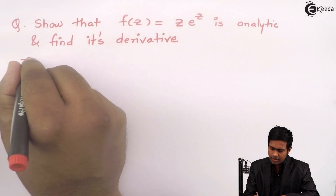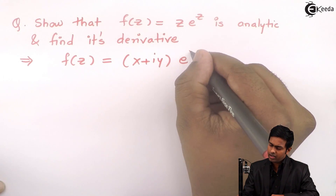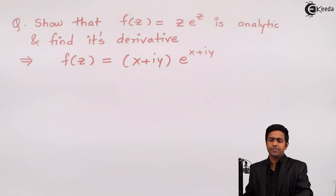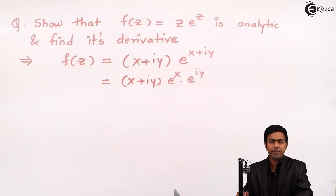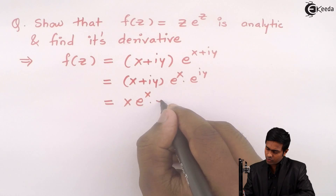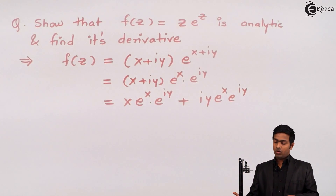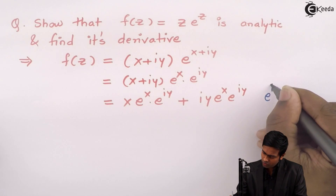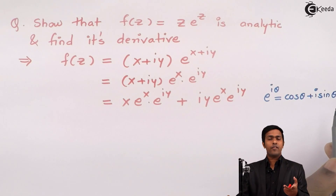So f(z) = z·e^z. Substituting z = x + iy, we get f(z) = (x + iy)·e^(x+iy) = (x + iy)·e^x·e^(iy). Now, the value of e^(iθ) = cos θ + i sin θ, which is the standard Euler identity used to express the exponential form of a complex number.